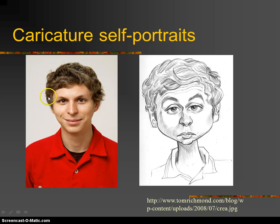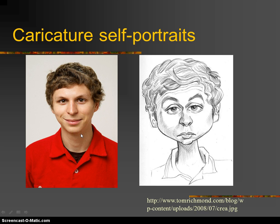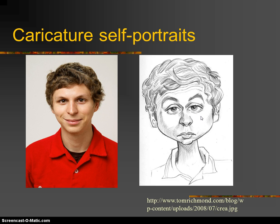Our next one is a caricature — this is your cartooning part. With this, you're going to be taking a picture of yourself. You're going to be thinking about what are some of your features, what are some of the things that really make you stand out. In this example picture, he's got curly hair, a roundish face, and kind of close-set eyes. All of that really comes through in the cartoon. You're going to be able to explain who you are through your caricature.